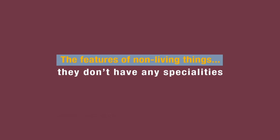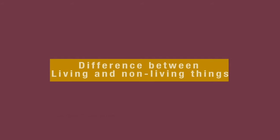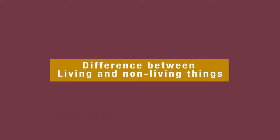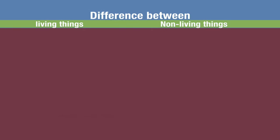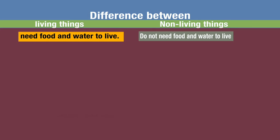Can non-living things move from one place to another? No, they won't move from one place to another. They are just the opposite of living things, and from there you get the difference between living and non-living things. For example: living things need food and water to live, but non-living things do not need any food and water.